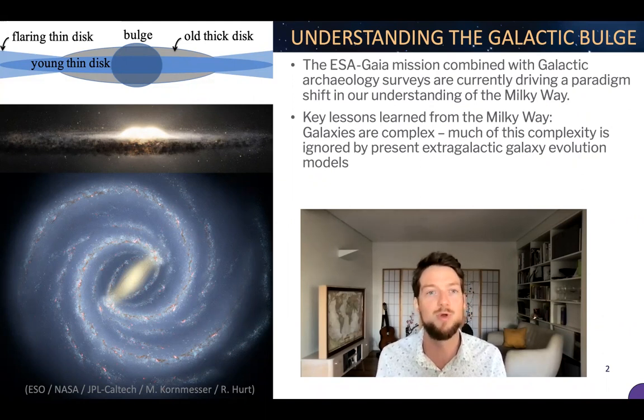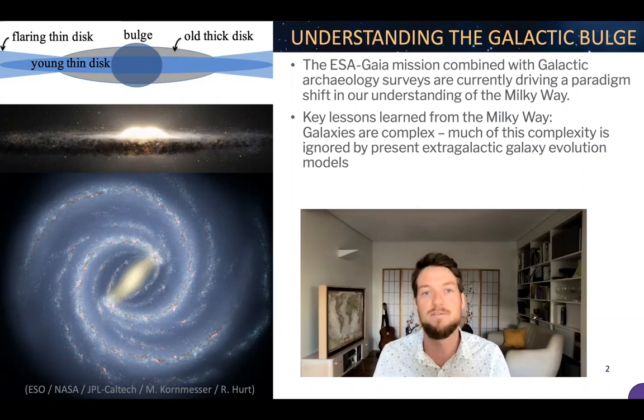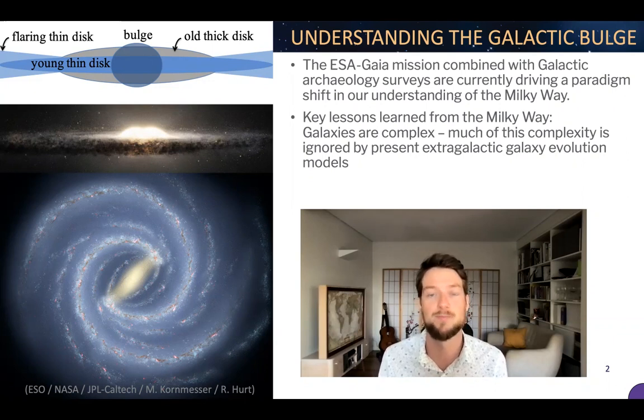And in our own galaxy, we're learning about the thin disk, the thick disk, the flaring of the thin disk, but also various central components such as the short and long bar within the bulge that seem to indicate that galaxy formation is a very complex process. Unfortunately, much of this complexity is lost or sometimes ignored by extragalactic galaxy evolution models because we simply do not have the detailed data to do the same type of measurements. I think this is now changing with MUSE.